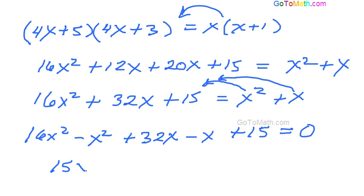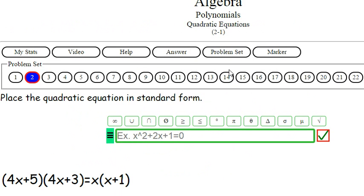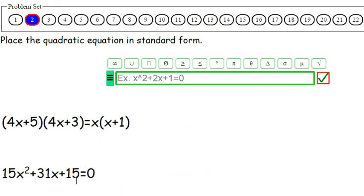So this becomes 15x squared plus 31x plus 15. We're going to write it in standard form - consider this as an expression that we want to write in standard form. So that's the form we're looking for: 15x squared plus 31x plus 15 equals zero. There you go.